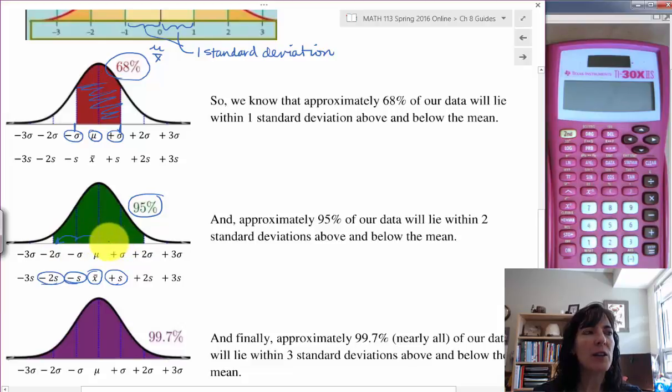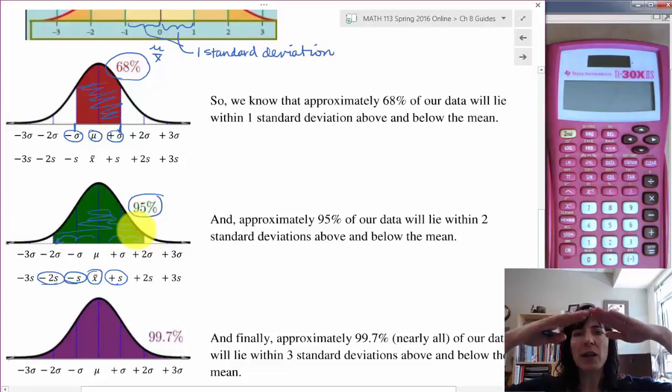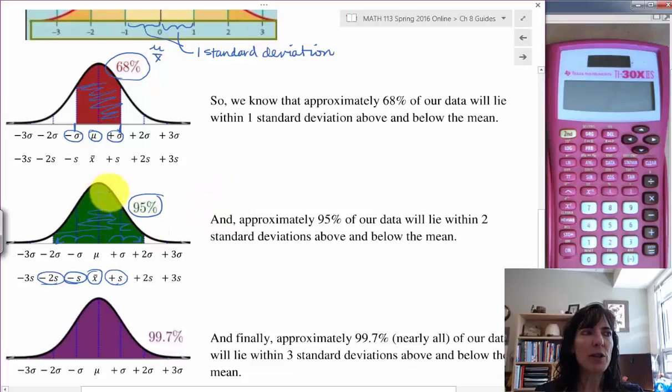And on the right side, one, two standard deviations above. So we get this big green region here, and that region will have 95% of our data. If we have that nice mound shape that's symmetric on both sides for our distribution, we can make the conclusion that 95% of our data values are in this green area, and that's within two standard deviations.